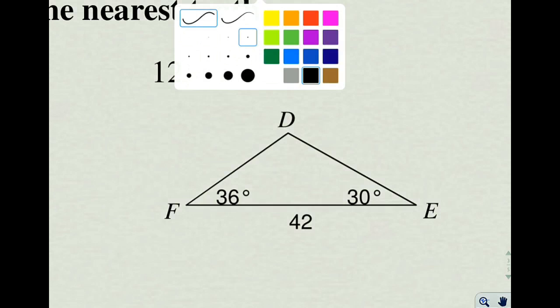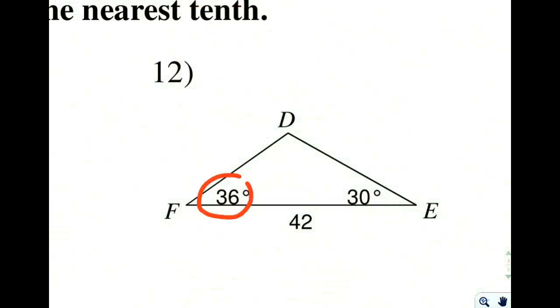We see here that we have an angle, and then there's an opposite side which is unknown. We also have a side, an opposite angle which is unknown.